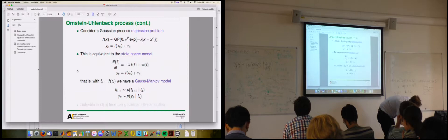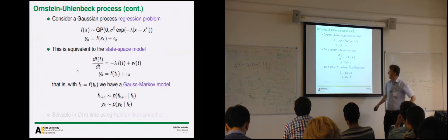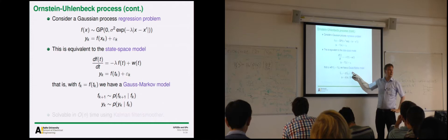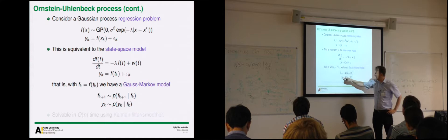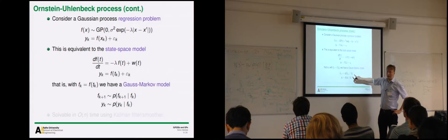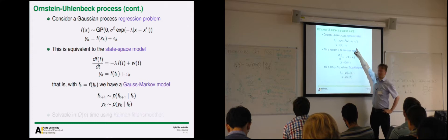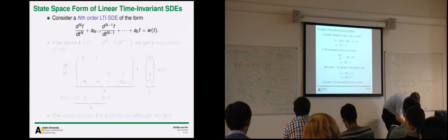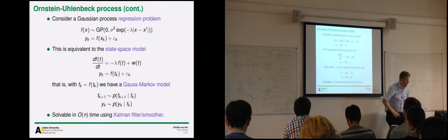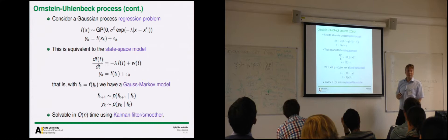What we actually did was write down the transition density of the process, which happened to be Gaussian with mean A·f_k and covariance Q. The measurement model already has a simple linear form. So in that sense, this is equivalent to a very simple linear Gaussian state-space model, which is solvable with a Kalman filter.